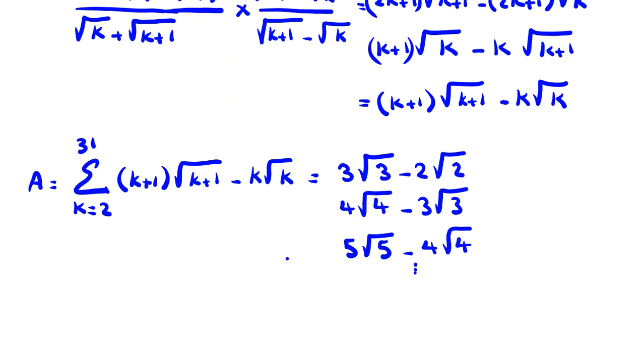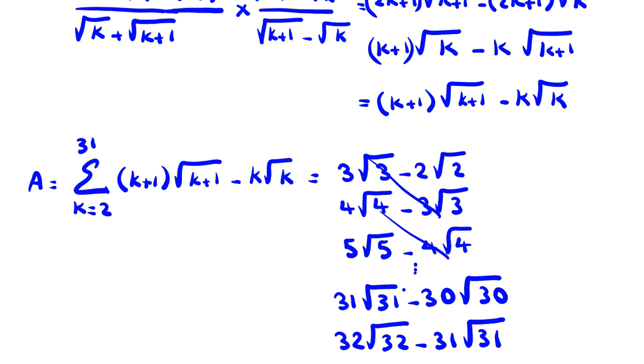And the last one, last two terms: 30, it will be 31 root 31 minus 30 root 30. And if you replace k with 31, it will be 32 root 32. Root 31, and they will be cancelled like this, like this, like this.